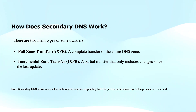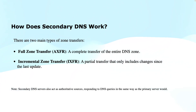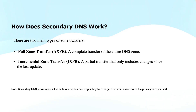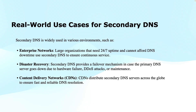When you configure secondary DNS, the secondary server periodically pulls zone updates from the master server — this process is called zone transfer. The primary DNS server is the authoritative source for DNS records and the secondary DNS server holds a copy. Note that the secondary DNS server also acts as an authoritative source, responding to DNS queries in the same way as the primary server.